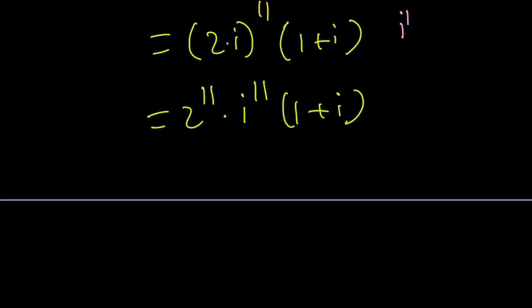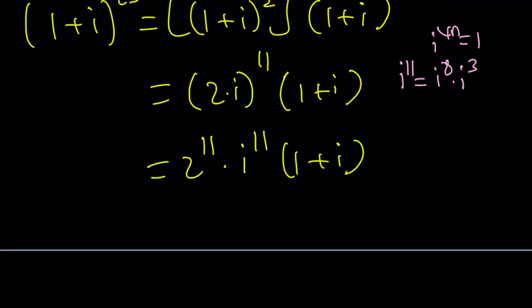Well, you got to remember, i to the 8th is 1, because i to the 4n is 1. If n is an integer, they always ask me, specify what n is. n is an integer. Let me say it one more time. So, this is 1. Answer is i cubed, but i cubed is negative i.